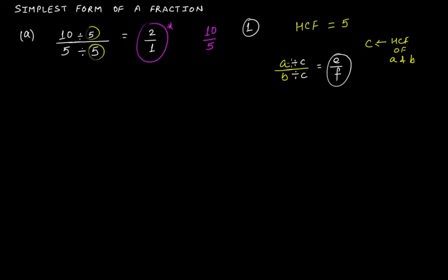So what you have to do: find the highest common factor of numerator and denominator, divide both by the HCF, and the result will be the simplest form. If the HCF of numerator and denominator is already 1, then the fraction is already in its simplest form.